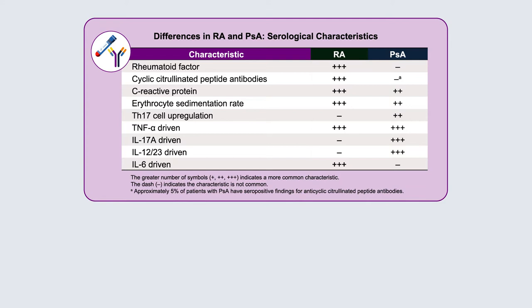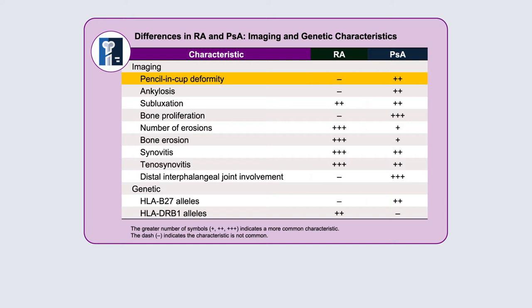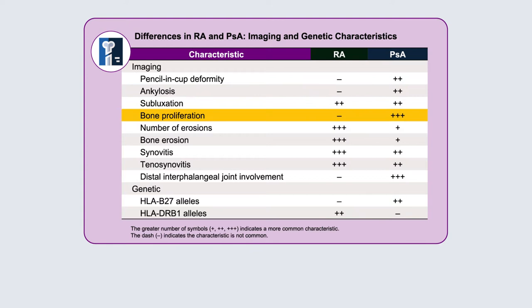From the serologic perspective, RA is a seropositive disease with three-quarters positive ACPA and rheumatoid factor. Psoriatic arthritis, by definition, is seronegative. From the immunologic perspective, there are many shared pathways such as TNF being important in both, but with a propensity for upregulation of the TH17 pathway in psoriatic arthritis that is not as prominent in RA. Radiographically in their fully developed form these diseases are easily differentiable, but we don't see pencil-and-cup deformities very often anymore. Bony proliferation is a major differentiator of psoriatic arthritis, as is distal interphalangeal joint involvement.